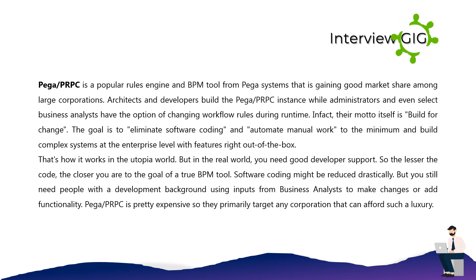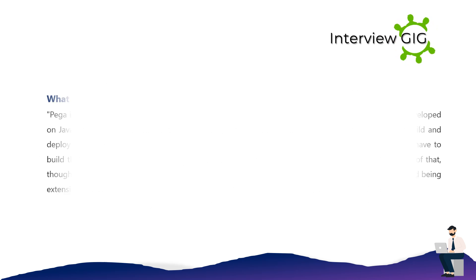That's how it works in the utopia world. But in the real world, you need good developer support. The lesser the code, the closer you are to the goal of a true BPM tool. Software coding might be reduced drastically, but you still need people with a development background using inputs from business analysts to make changes or add functionality. Pega/PRPC is pretty expensive, so they primarily target corporations that can afford such a luxury.